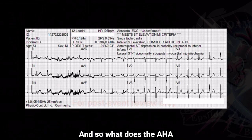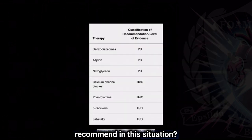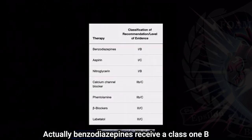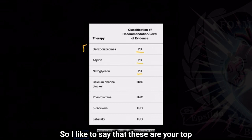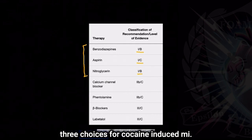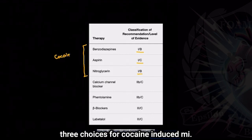So what does the AHA recommend in this situation? Benzodiazepines receive a Class 1B recommendation, aspirin a Class 1C, and nitro a Class 1B. So I like to say that these are your top three choices for cocaine-induced MI.